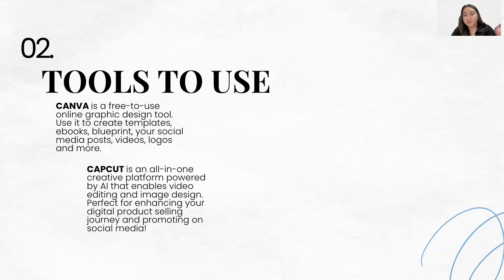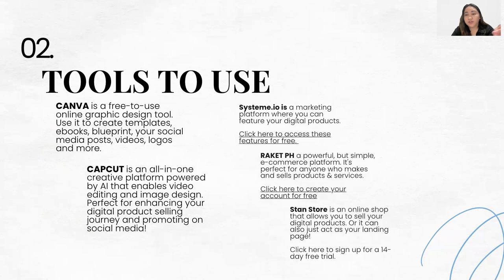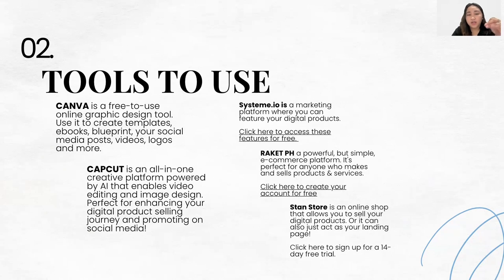For selling tools, there's System.io, Rocket.ph, StandStore — and you can also use Shopee, Lazada, and Shopify. These are the tools you use to list your products so sales are automated.